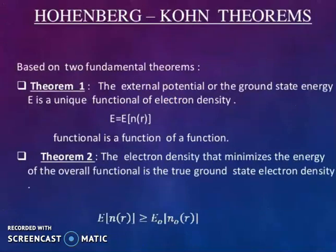Hohenberg-Kohn theorem is based on two fundamental theorems. Theorem 1: the external potential or ground state energy E is a unique functional of electron density. A functional is a function of a function. Theorem 2: the electron density that minimizes the energy of overall functional is the true ground state electron density.